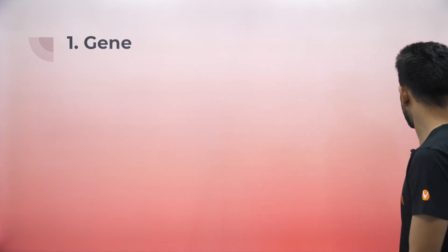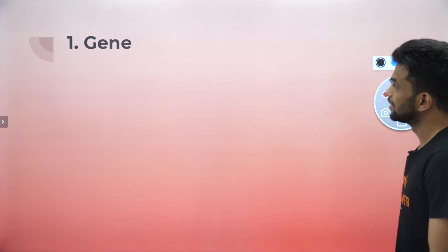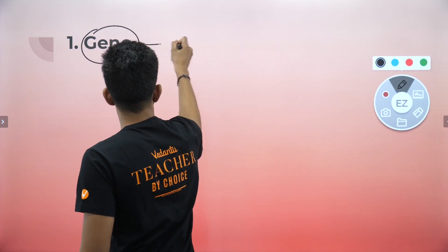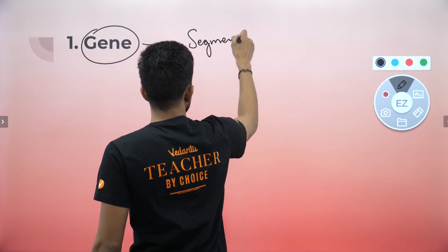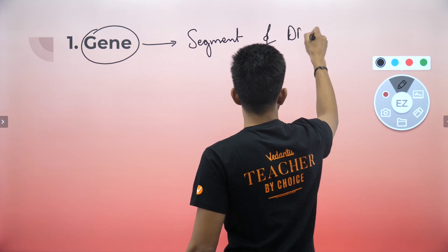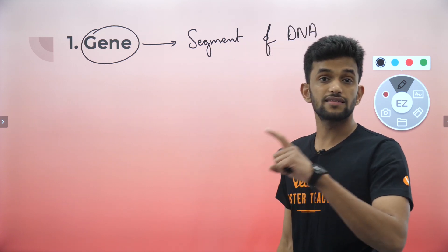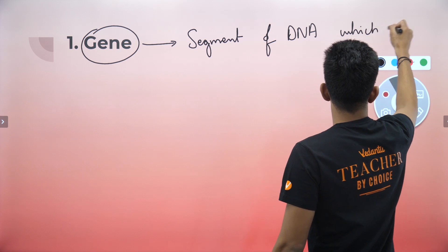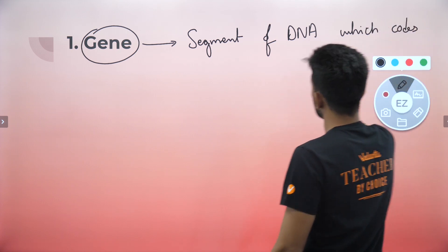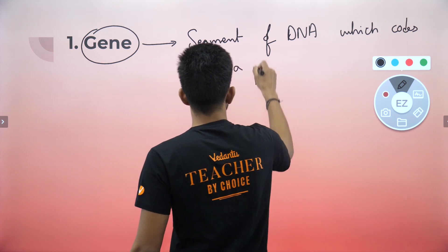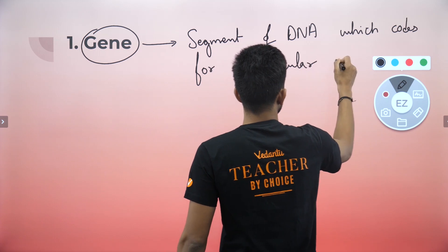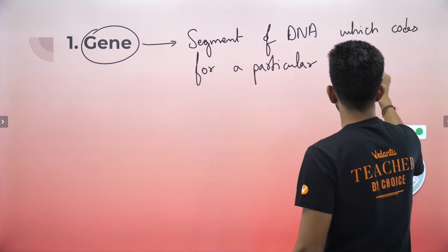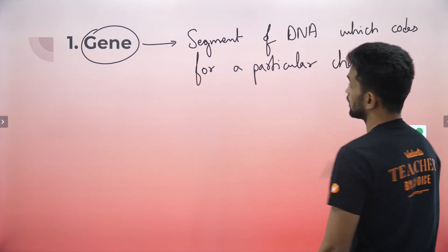Today we are going to discuss about gene. Gene is our first term. So, what is a gene? A gene is a segment of DNA — which codes for a particular character.